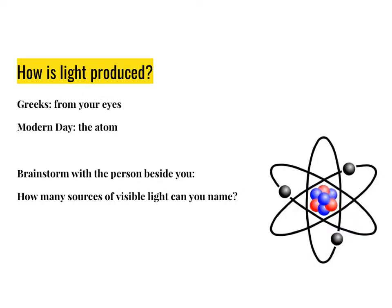So how is light produced? If you think back to the beginning of this unit, we looked at how the Greeks originally thought that light was produced by your eyes, that us as human beings could produce light. They thought that when we opened our eyes two beams of light came out of them, and then when we closed our eyes the light disappeared. Today we know that's not true. We know that light comes from other sources.